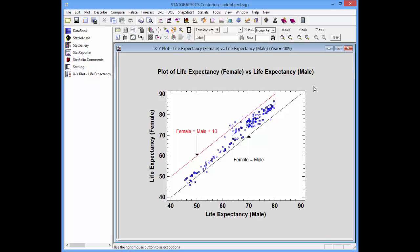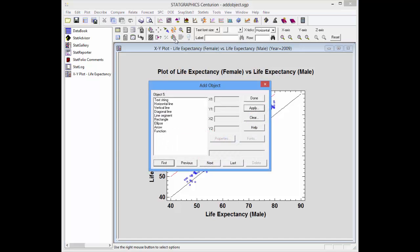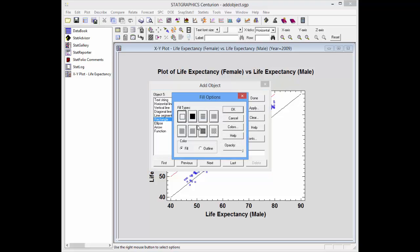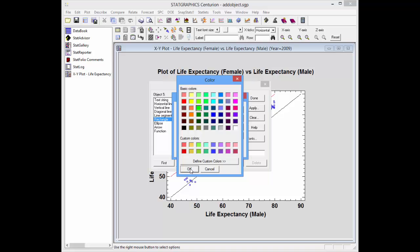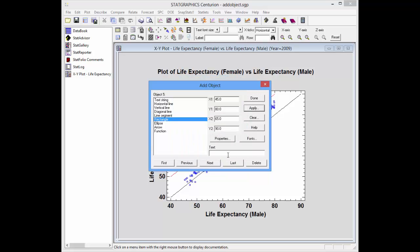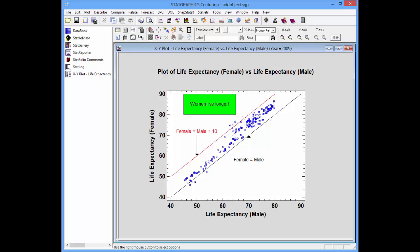Let's annotate the graph a bit more. I'll go back to the add objects dialog box. This time though I'll pick rectangle to put my text inside a rectangle. I need to enter the coordinates of opposite corners of the rectangle. In this case I'd like my rectangle to go from X equals 45 and Y equals 80 to X equals 65 and Y equals 90. I'm also going to push the properties button, ask for a solid fill, push the colors button to make it green and then press OK twice. The text I want to enter is women live longer. I'll push apply and then done and you can see that my text has been added to the graph.